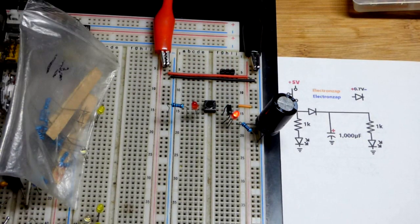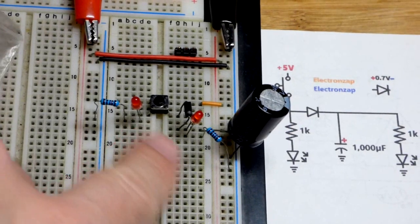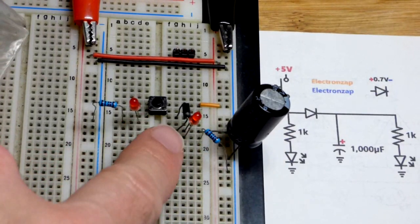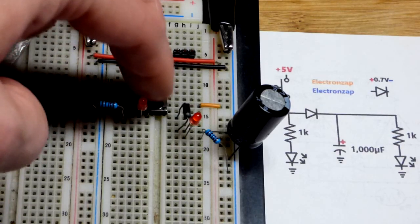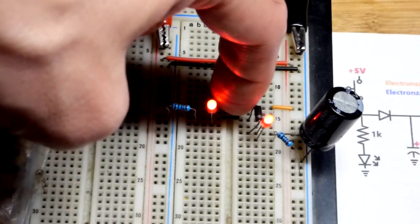So what I did here was isolate one of the circuits from the other with a diode. So we can charge the capacitor and light that LED while lighting this LED at the same time over there. You can see both LEDs are lit.